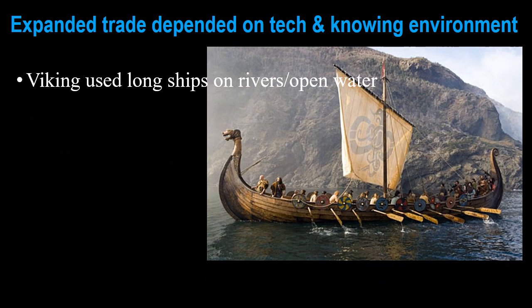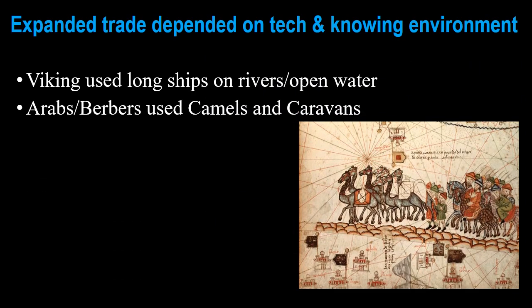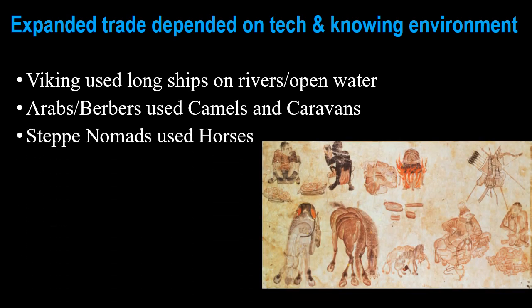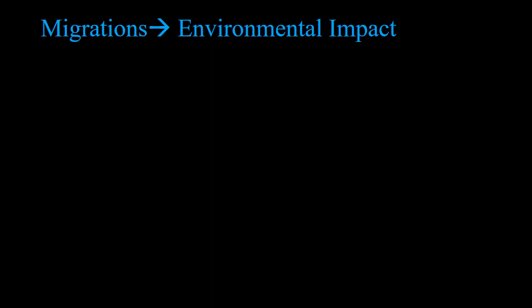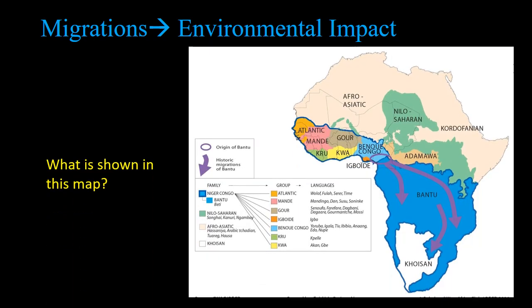Expanding trade depended on technology and knowing the environment. The Vikings had longships with sails and oars with shorter hulls usable in rivers or open water. The use of camels and caravans by North African Berbers and Arabs was key, as was the use of horses by steppe nomads. Migrations also had environmental impact — the Bantus, Central West Africans, spread to much of Southern and Central Africa. What three things are they spreading?